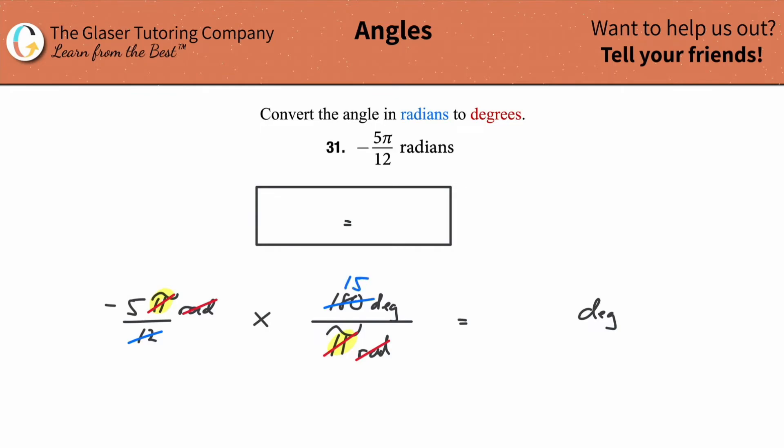So you know what this whole thing simplifies down to? It simplifies down to literally negative 5 times 15 degrees. And what does that work out to be? That works out to be negative 75 degrees. That's the answer.